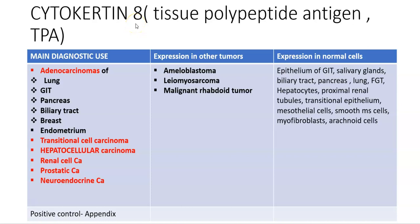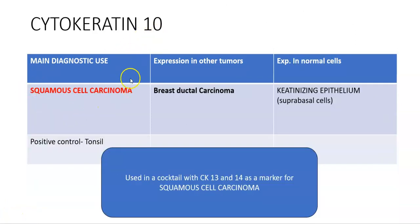Cytokeratin 8, also known as TPA (tissue polypeptide antigen), is used diagnostically in adenocarcinomas of lung, GIT, pancreas, biliary tract, breast, and endometrium. In addition, it is positive in transitional cell carcinoma, hepatocellular carcinoma, renal cell carcinoma, prostatic carcinoma, and neuroendocrine carcinoma. It is also expressed in ameloblastoma, gliosarcoma, and malignant rhabdoid tumor. The positive control is appendix. Cytokeratin 10 is used for squamous cell carcinoma and is also expressed in breast ductal carcinoma. The positive control is tonsil; it is used in a cocktail with CK13 and CK14.